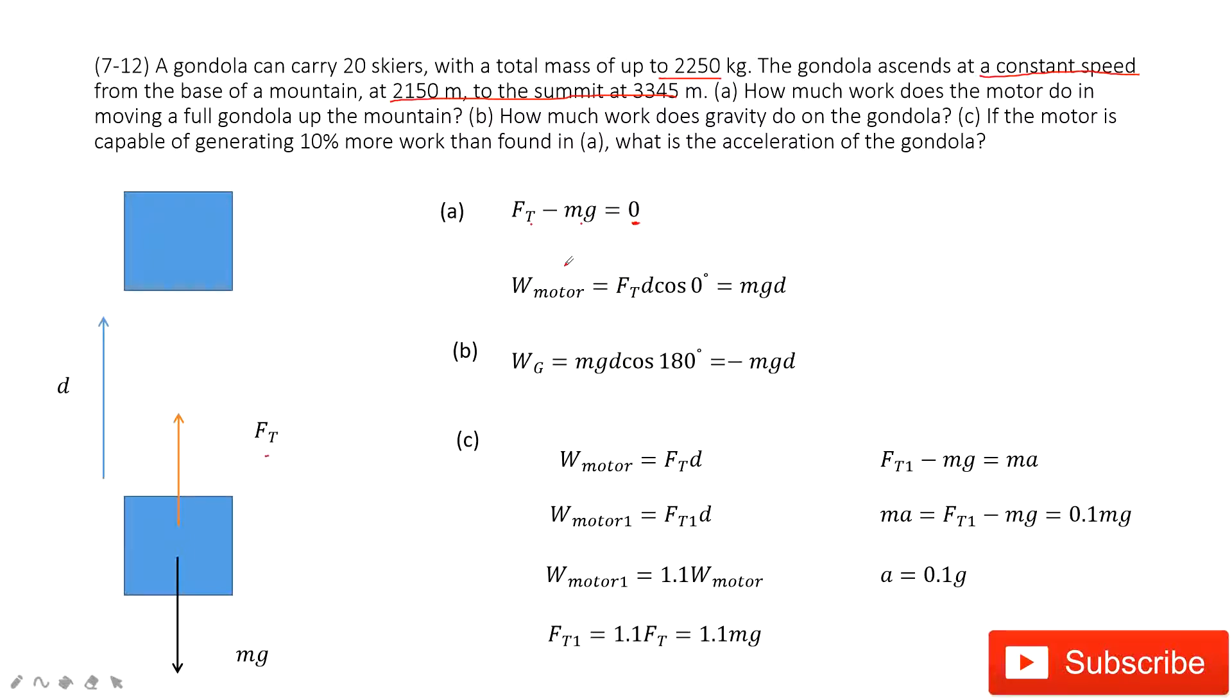The next one, we can get the work done by the motor. So it is the force d cosine theta. So we look at there. The angle between the force and the d is zero. Both of them are up. So cosine zero degrees is just one. So we get the Ft is just mg, so mgd.